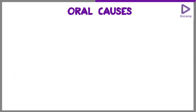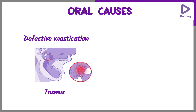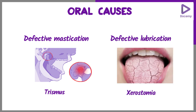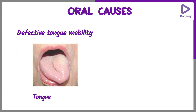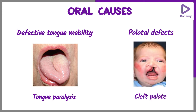The oral causes of dysphagia can be due to defective mastication such as trismus, defective lubrication such as in xerostomia, and defective tongue mobility such as in tongue paralysis or palatal defects like cleft palate.